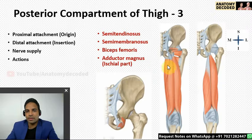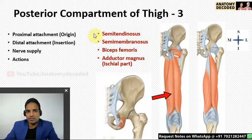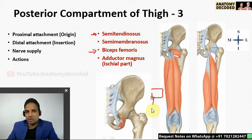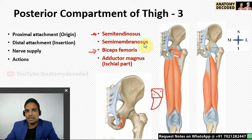Now let's cover the muscles of the posterior compartment of the thigh — also called the hamstring or flexor compartment. Semi-tendinosus has its proximal attachment from the ischial tuberosity, sharing the upper quadrangular part's medial area with the long head of biceps femoris. The upper lateral part of the quadrangular area gives attachment to semi-membranosus. The lower triangular lateral part gives attachment to the ischial part of adductor magnus.